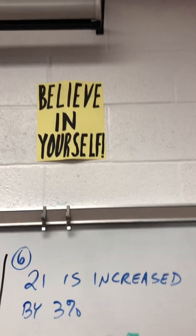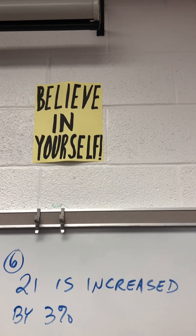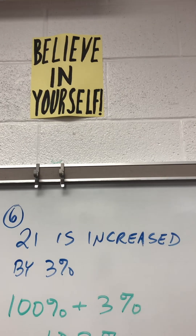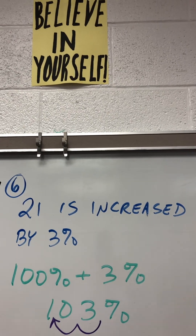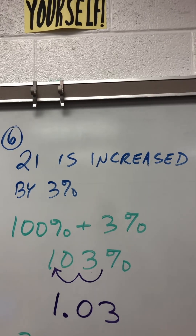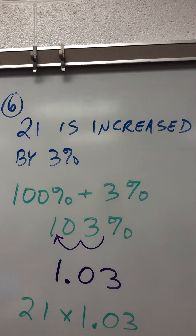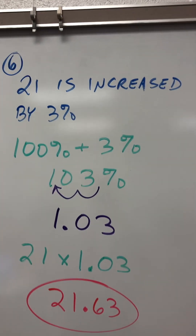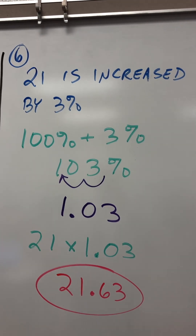21 is increased by 3%. That's 100% plus 3%, or 103%. Move the decimal two places, that's 1.03. Do 21 times 1.03, gives you 21.63.